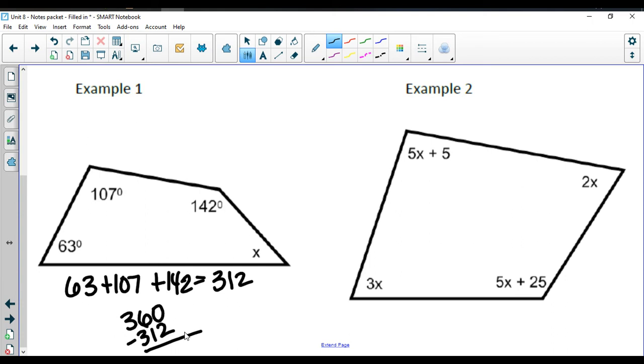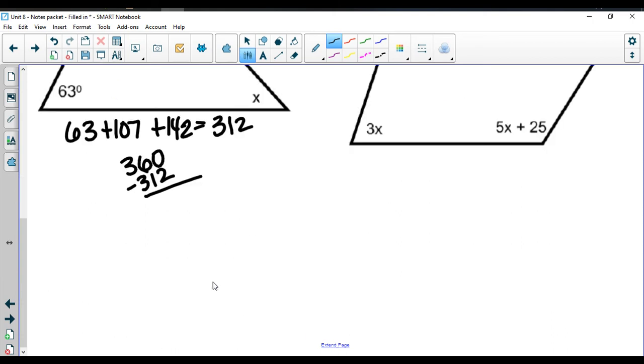Again, I always err on the side of writing more down. That way if I accidentally type something in wrong, I'm good to go. So x is equal to 48 degrees here.